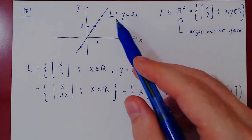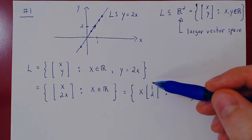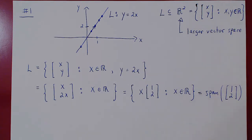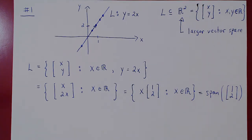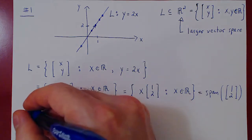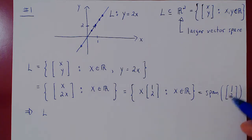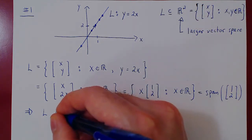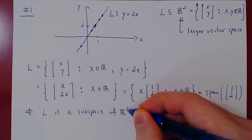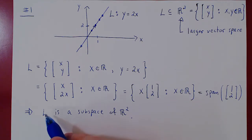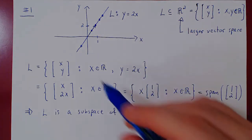The line given by y equals 2x is the set of all possible scalar multiples of the vector [1, 2], which is by definition the span of [1, 2]. The first corollary of the subspace theorem states that the span of any number of vectors in a vector space is itself a vector space. Since [1, 2] is in R2 and R2 is a vector space, L — the span of [1, 2] — is a subspace of R2, therefore a vector space living in the larger vector space that is R2.